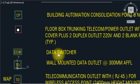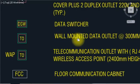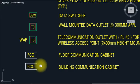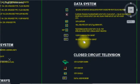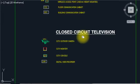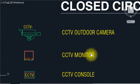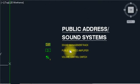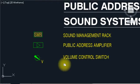VR, DWS — data switcher. TO wall mounted data outlet web and TO telecommunication outlet. Wireless access point of the plane. FCC floor communication cabinet. PCC building communication cabinet. CCTV — closed circuit televisions: CCTV indoor camera, CCTV outdoor camera, CCTV monitor, CCTV console, TRV digital video recorder. Public address sound system: SMR sound management rack, public address amplifier, volume control switches.